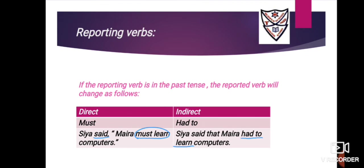Next category: if the reporting verb is 'said' and the reported verb contains the modal 'must' (showing outside compulsion), 'must' changes to 'had to.' Example: 'Siya said, Myra must learn computers.' Underline 'said,' circle 'must learn.' Because the reporting verb is 'said,' 'must' changes to 'had to.' Answer: 'Siya said that Myra had to learn computers.'